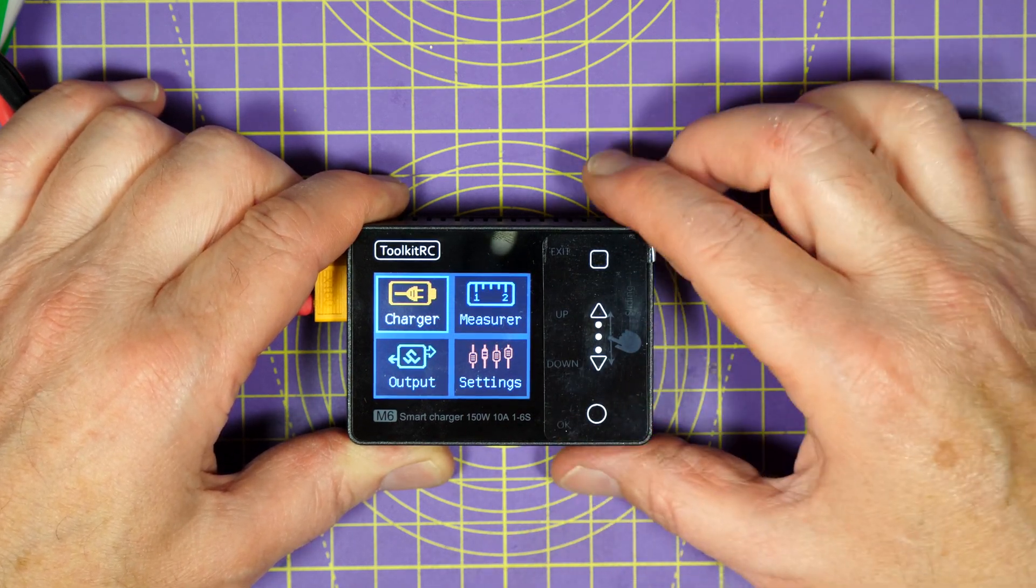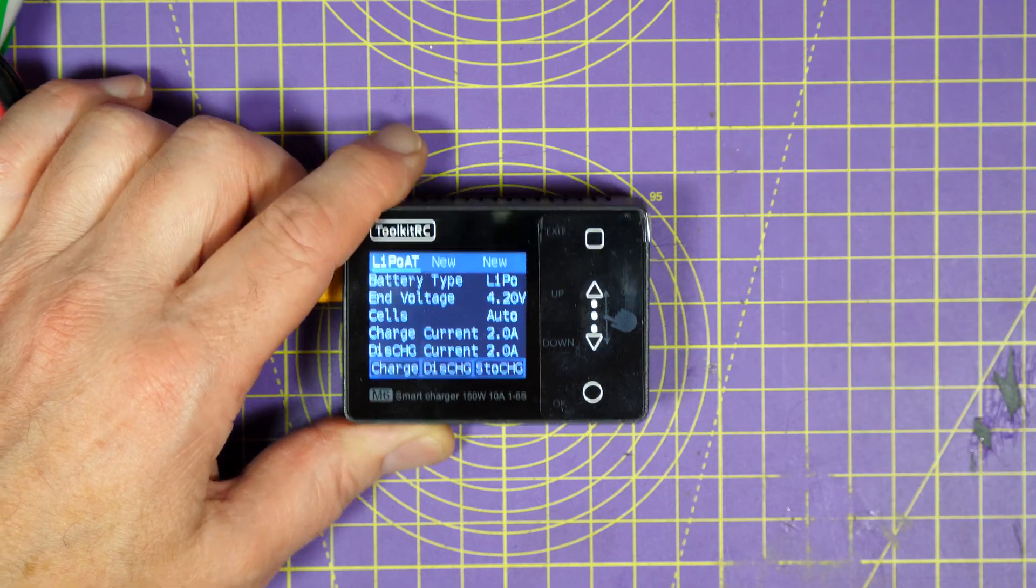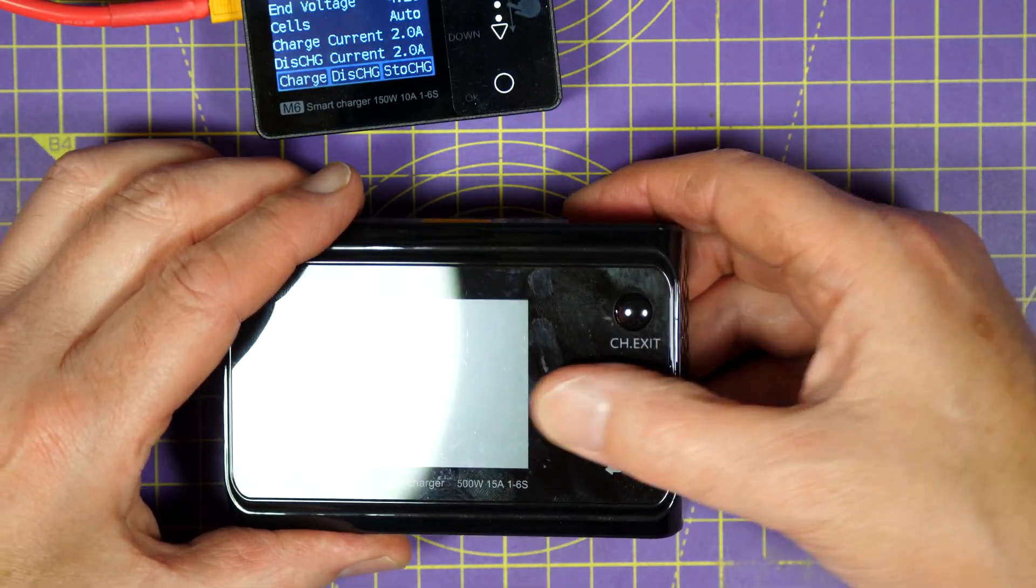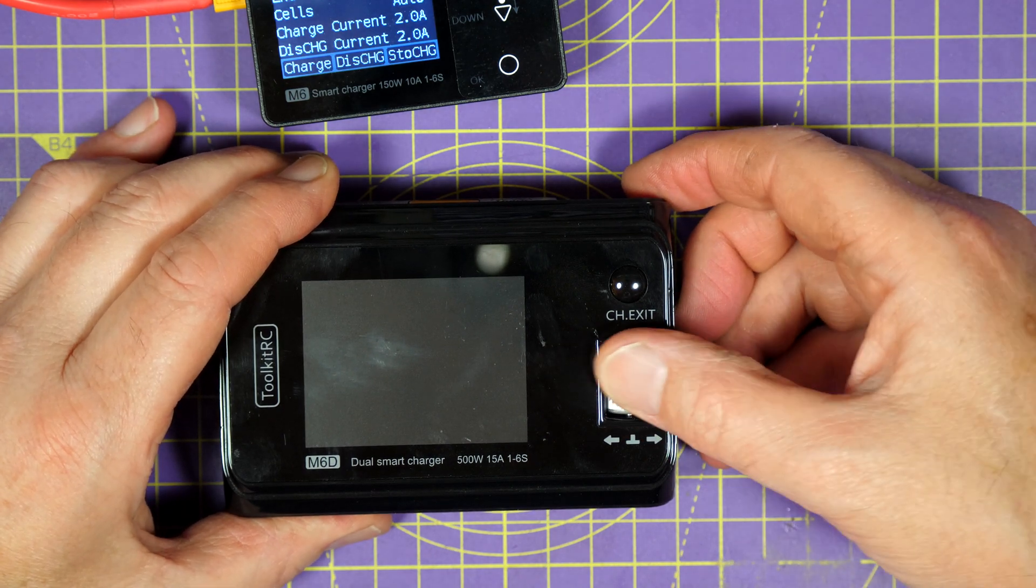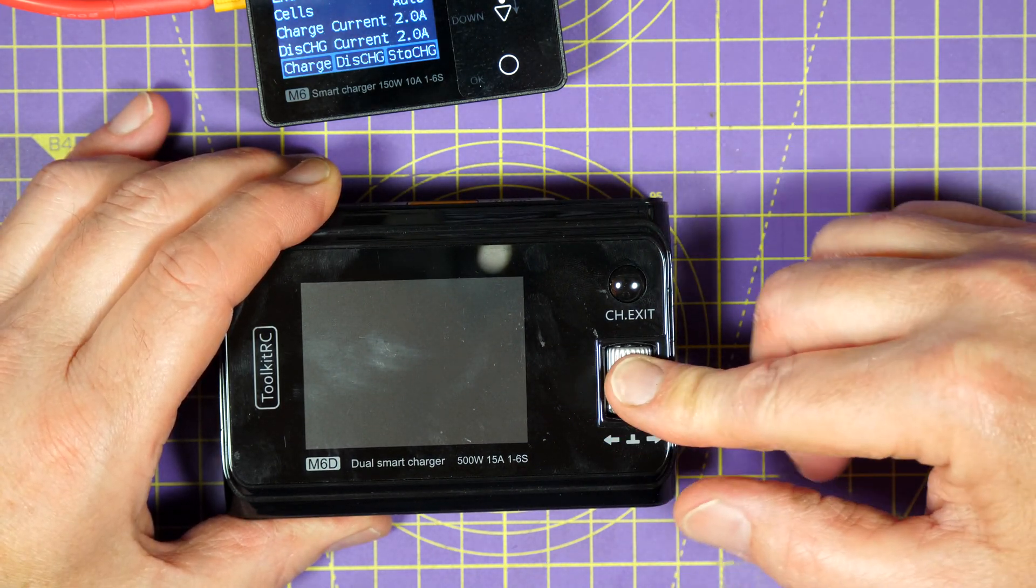Now, although these work great, and I can see where they've done this, I actually prefer the scroll wheel on the M6D. I know some people don't like this, but it's just personal choice, and this really works great for me.